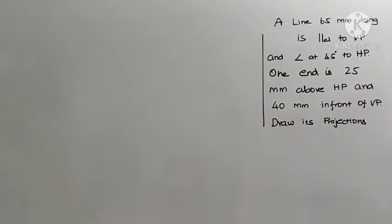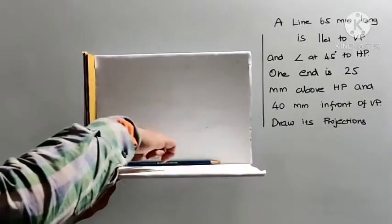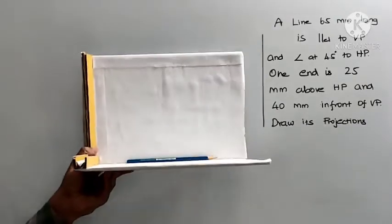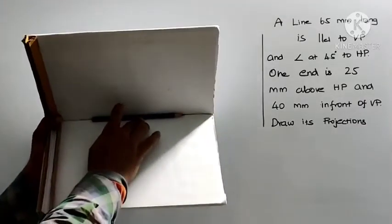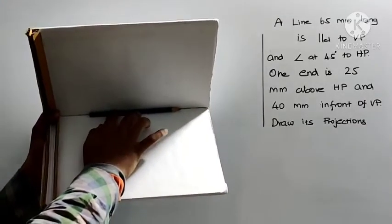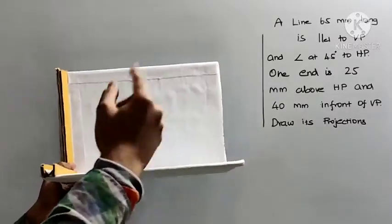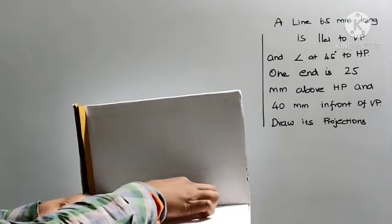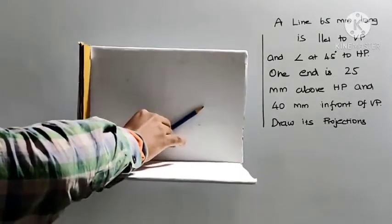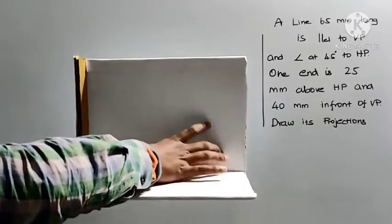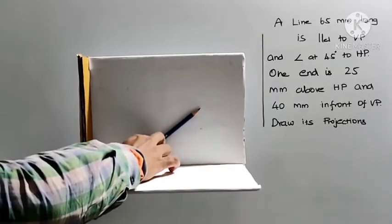With this data, let me position the line. This is my first quadrant and let us assume this pencil is my straight line. The line is parallel to the vertical plane — look here, this is my vertical plane and the line is parallel to it. Now, the line is inclined at 45 degrees to the horizontal plane. So I am going to tilt it like this, fixing one end. That fixed end is where I will start the drawing.